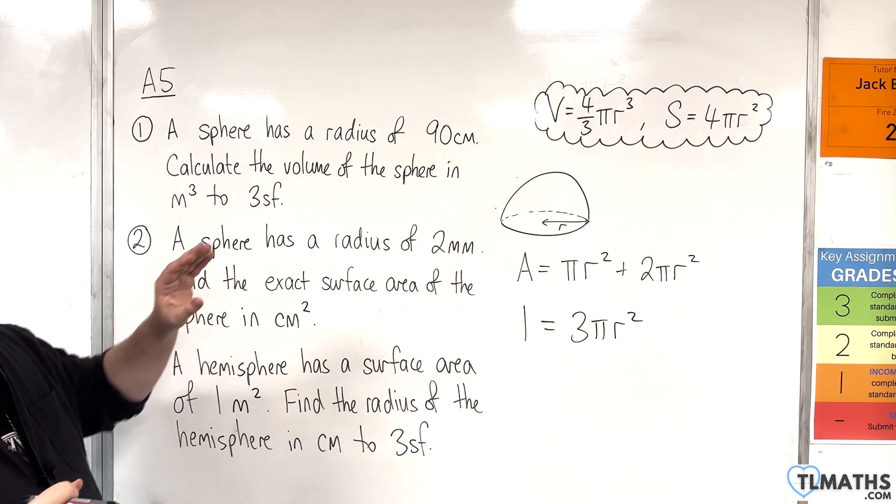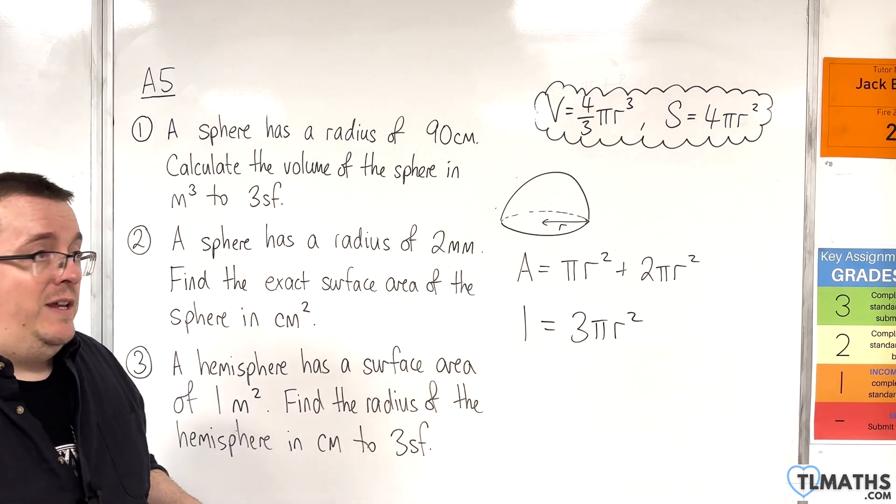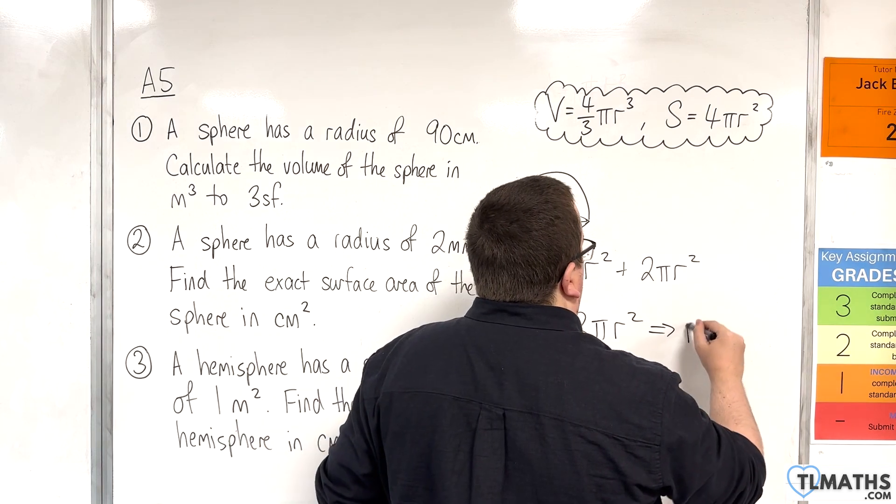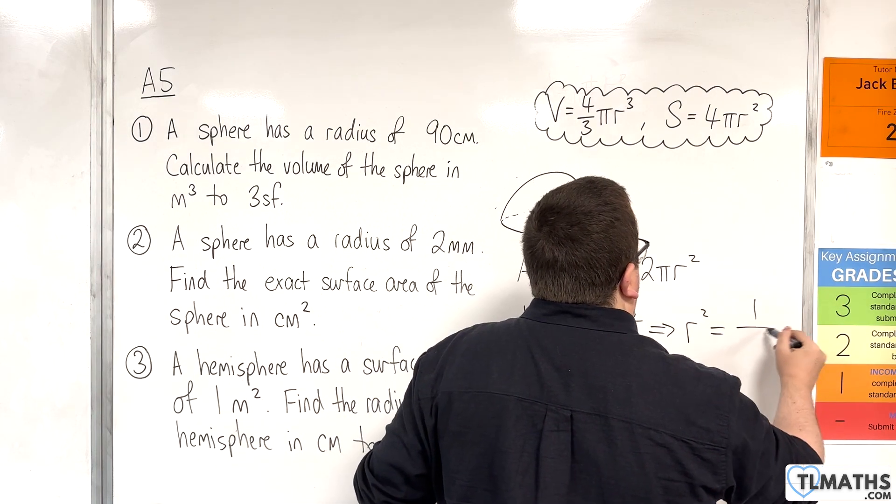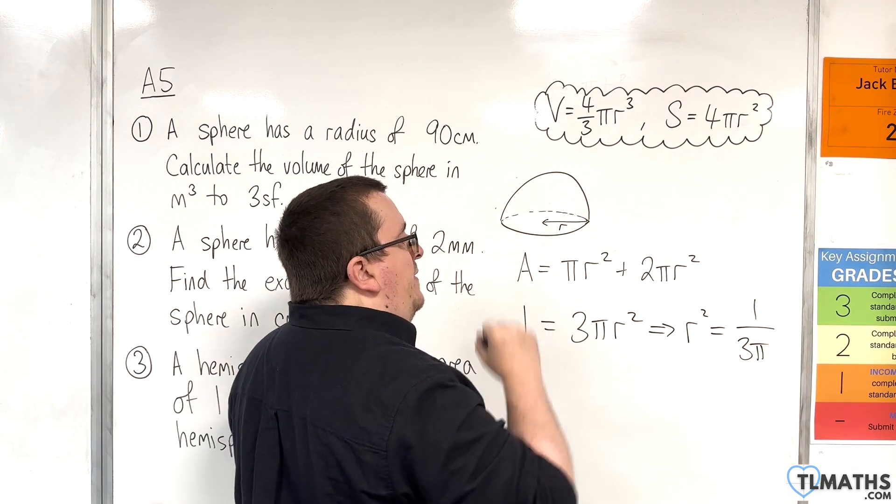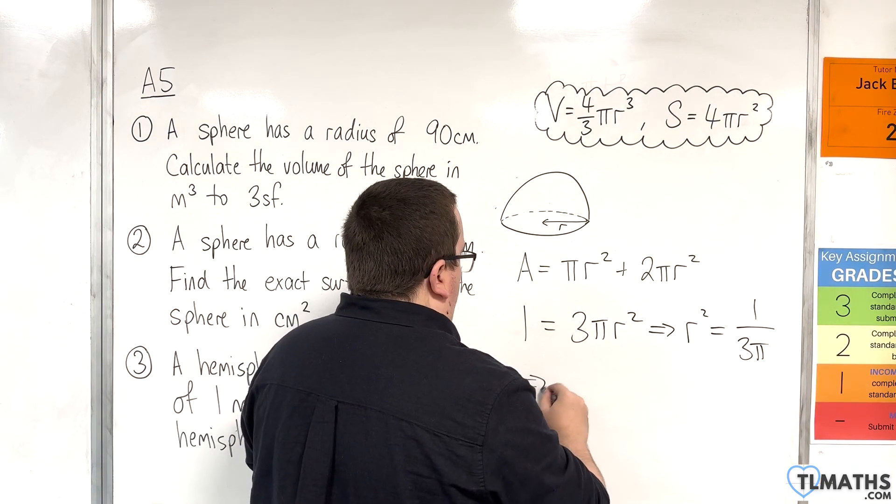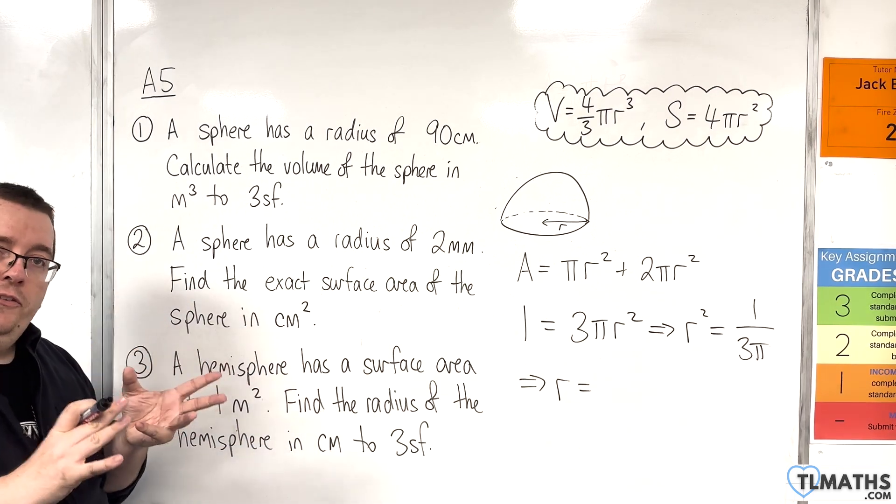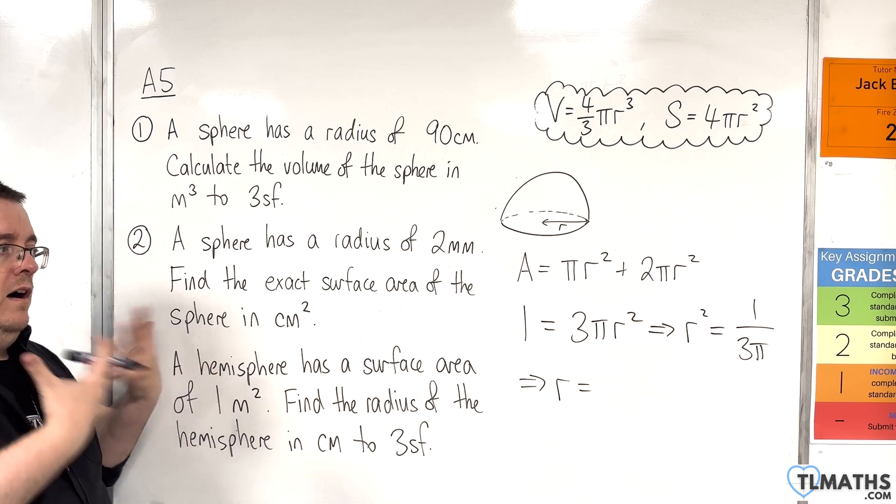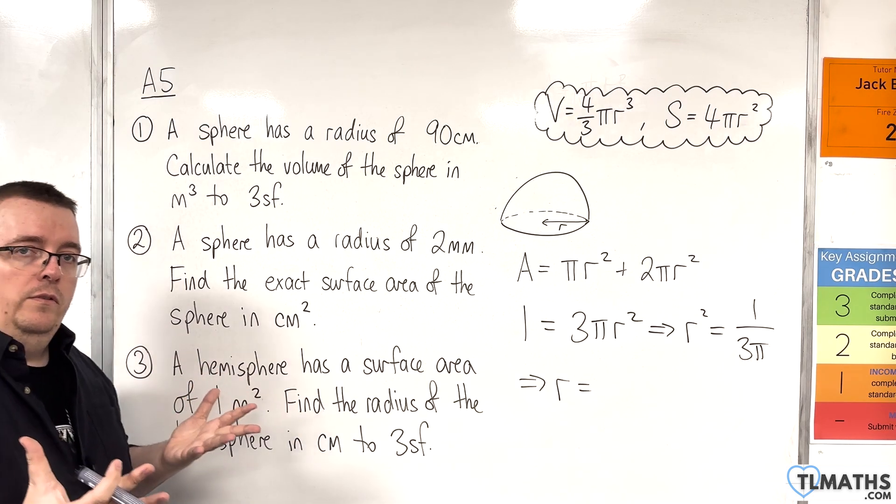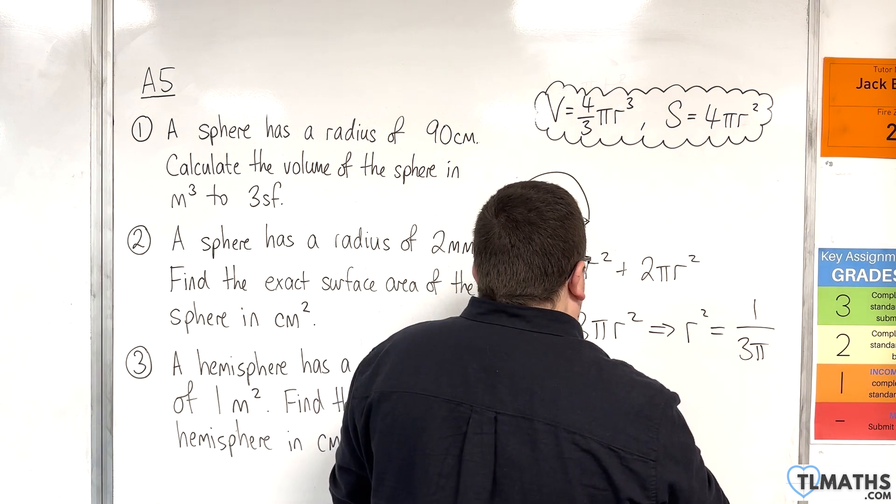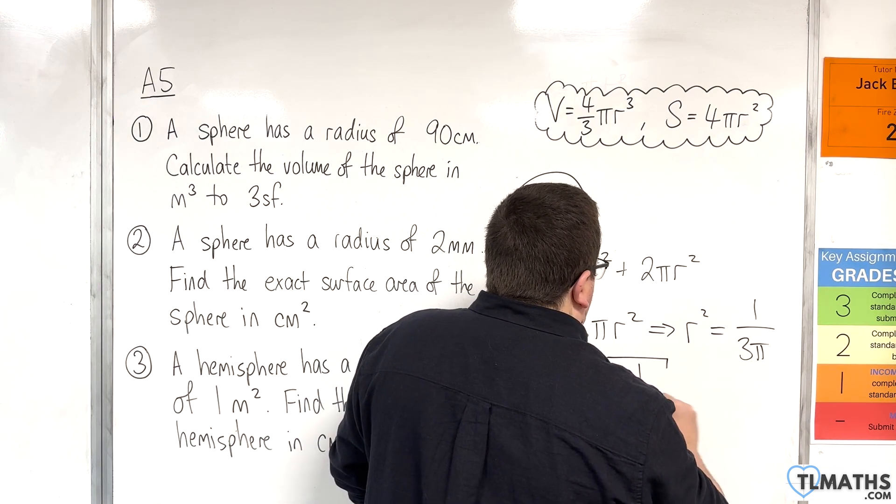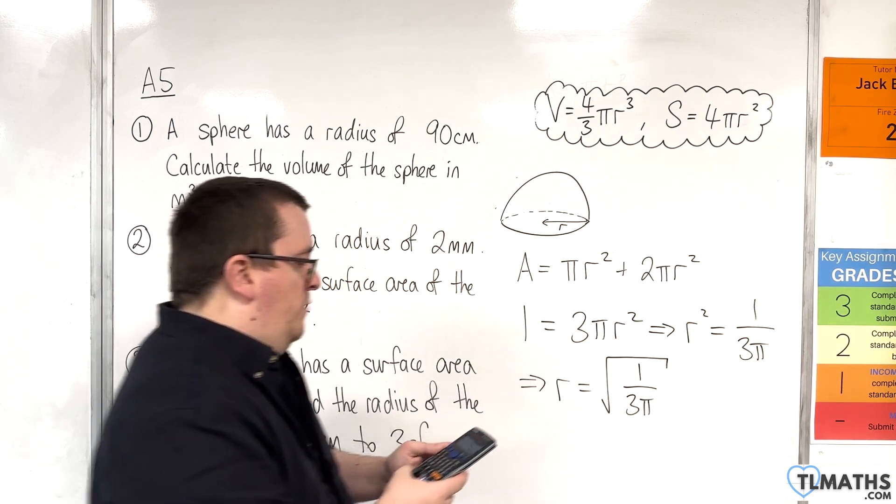OK, so this we can now rearrange to get r. So if I divide both sides by 3 pi, r squared will be 1 over 3 pi. And then I need to square root both sides. Now, of course, we're not bringing in any kind of plus minus here because r is a length. OK, so it will just be a positive value. So don't worry about plus minus here. We're just going to have the square root of 1 over 3 pi.